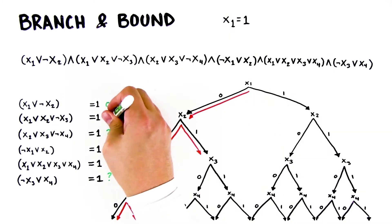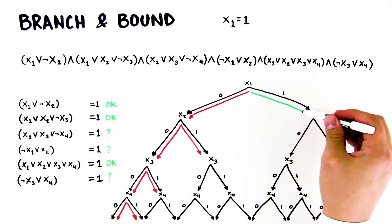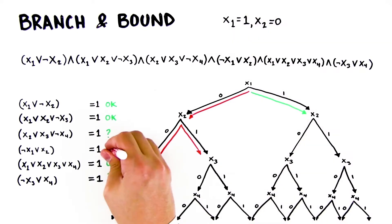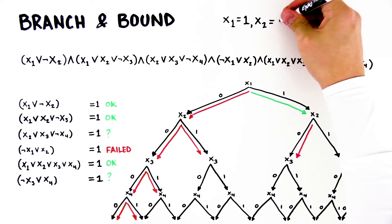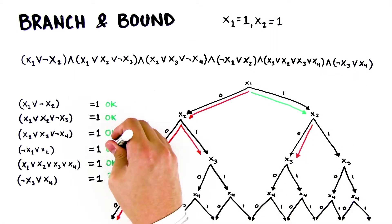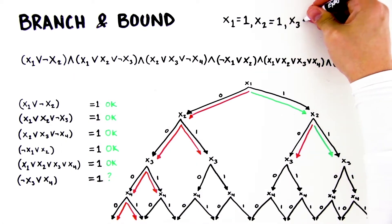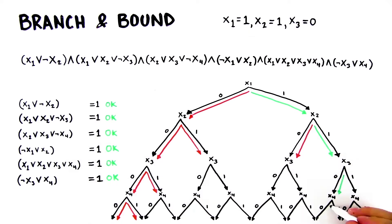We then start down the other side where x1 equals 1. We hit a conflict when x2 equals 0. When x2 equals 1, we satisfy two more clauses. We actually find the solution when x3 equals 0, having solved all the clauses.